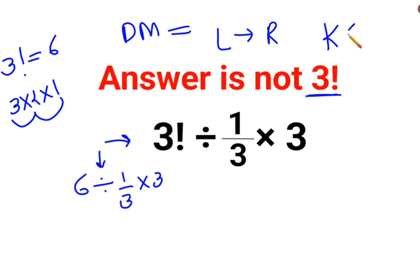you have to remember the rule of KCF where K stands for keeping the first number as it is, C stands for changing the division sign to multiplication, and F stands for flipping or taking reciprocal of 1/3 which is 3 multiplied by 3.